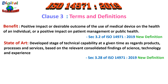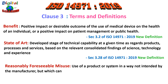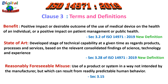The third new definition added is 'reasonably foreseeable misuse,' defined as the use of a product or system in a way not intended by the manufacturer, but which can result from readily predictable human behavior. All three terms — benefit, state of the art, and reasonably foreseeable misuse — have been added in the revised 2019 edition.